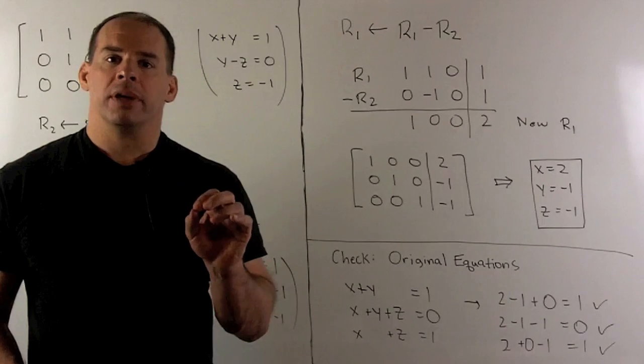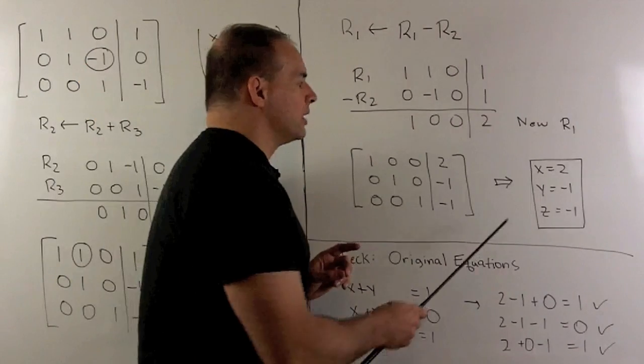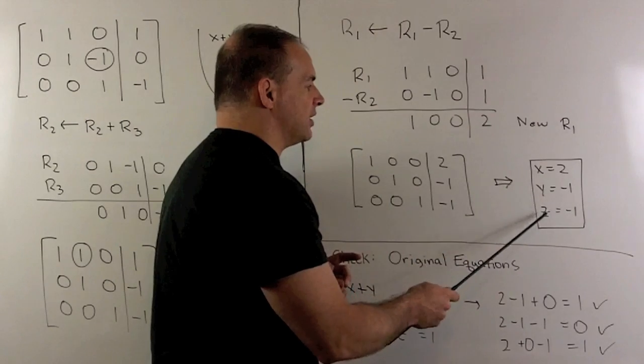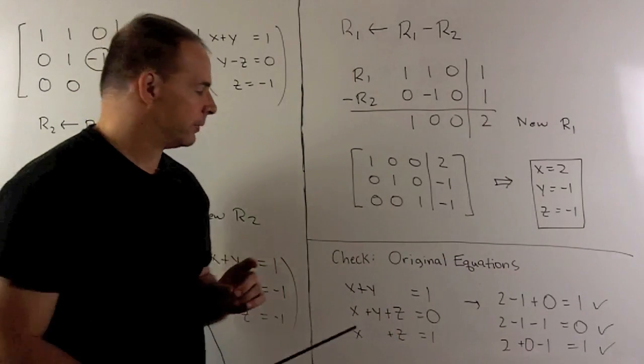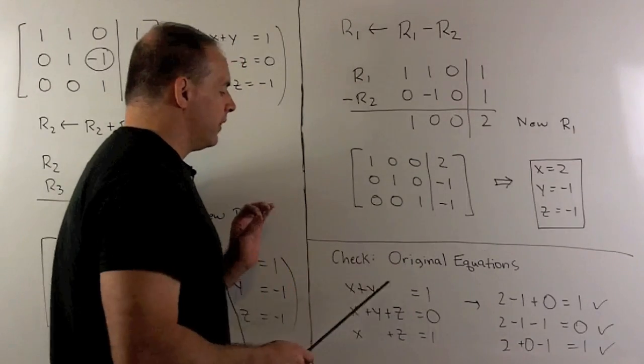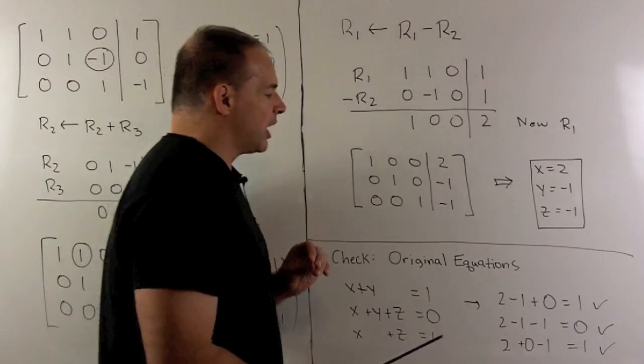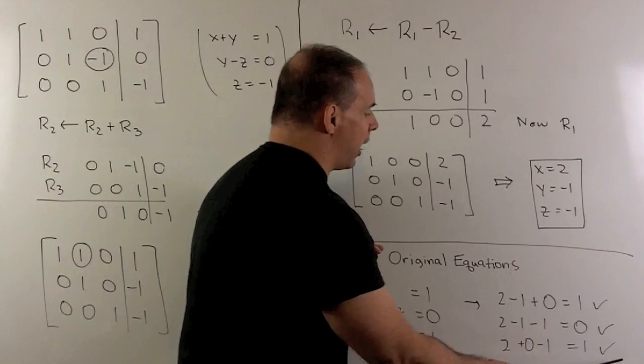Now we're not done yet. So if we have time, we always check our solution. So we're going to take these numbers for x, y, and z and put them into our original equations. Now if this is a solution, then when we put our numbers in, our equalities are going to hold. So if we check that, we see that in fact the check works out.